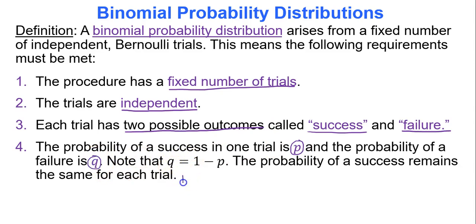Together P plus Q add up to one, because you have only two outcomes and in a probability distribution the probabilities must add to one. Therefore Q is always 1 minus P.